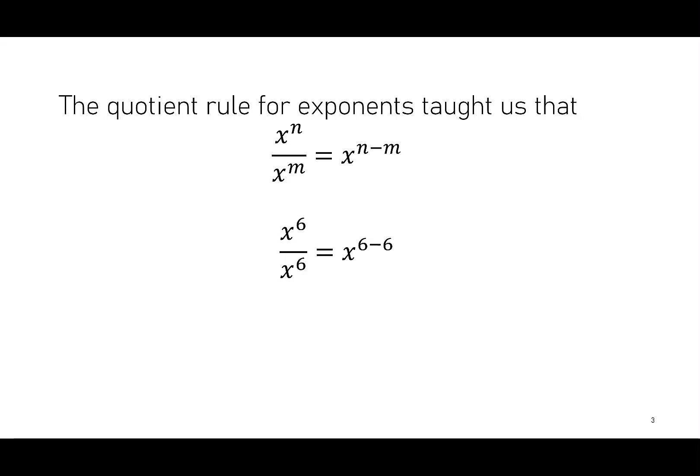But before we do that, let's think about x to the 6 over x to the 6. When we divide a term by itself we know it's equal to 1. We also know that when we subtract 6 and 6 we get x to the 0. This shows us that x to the 0 is equivalent to 1.